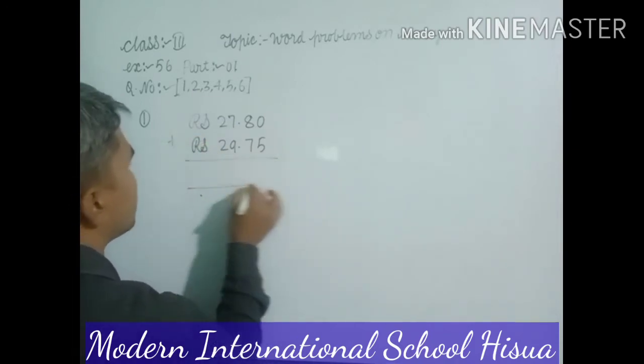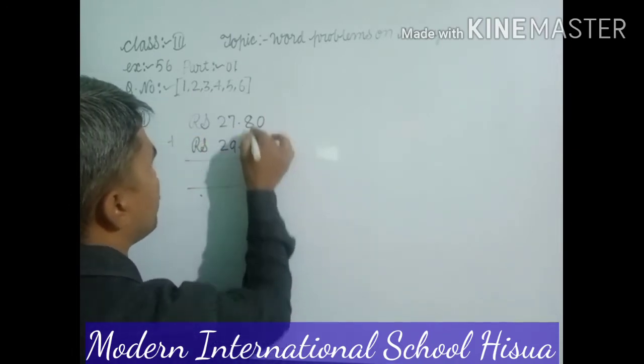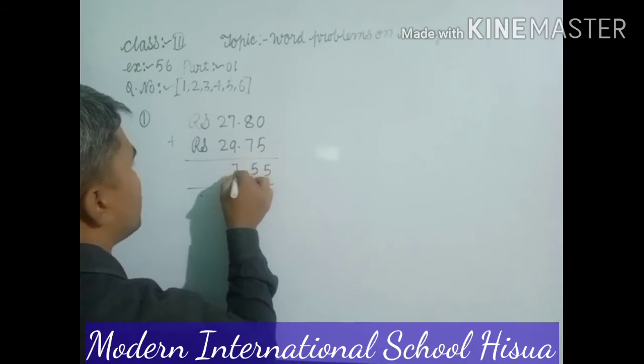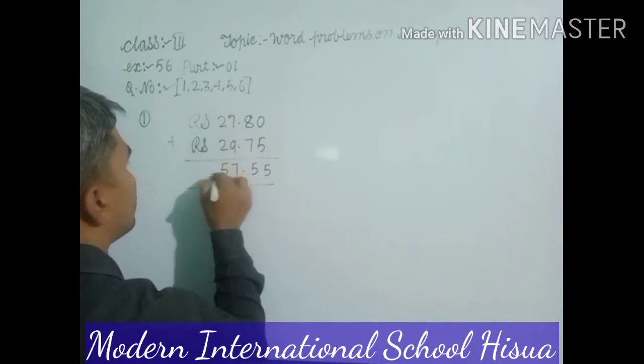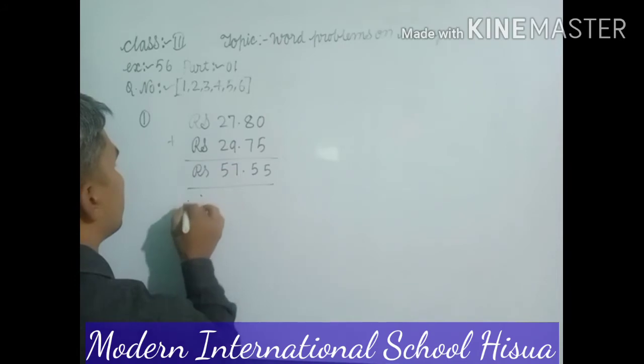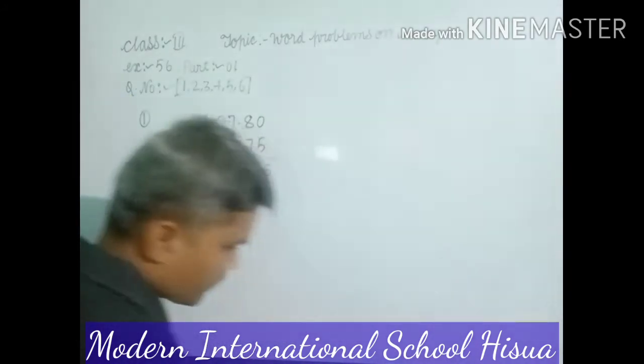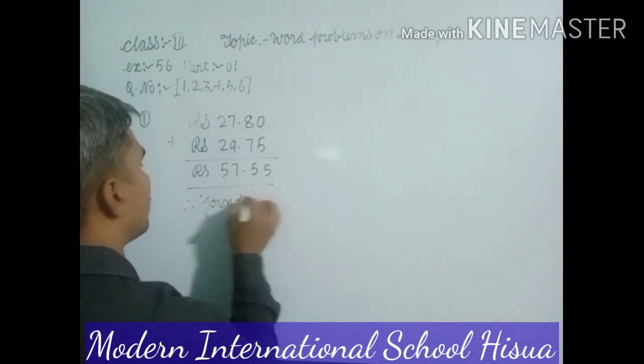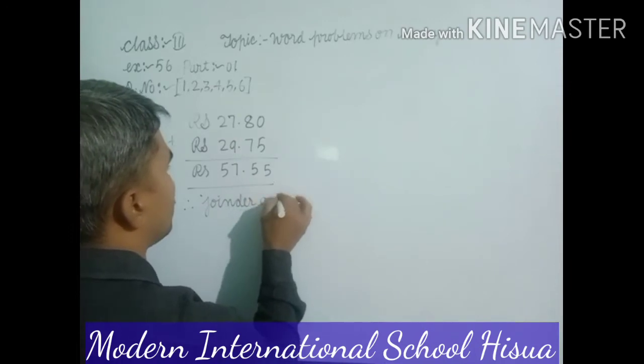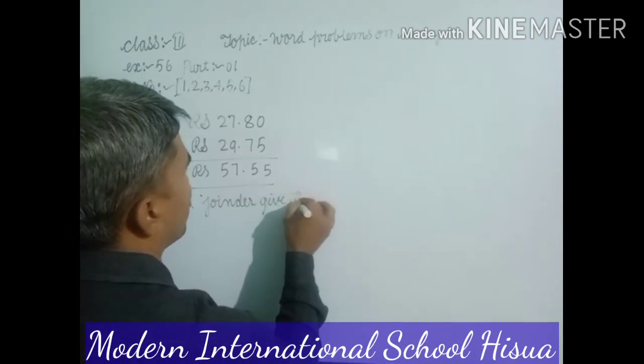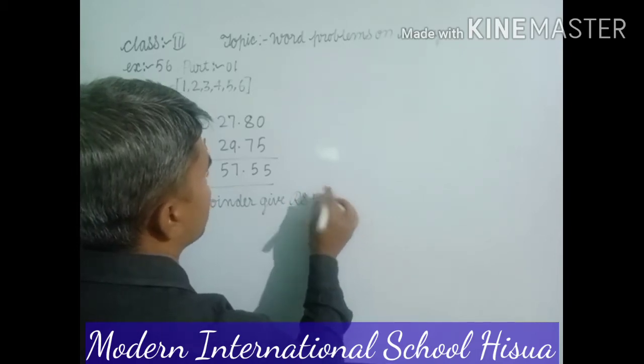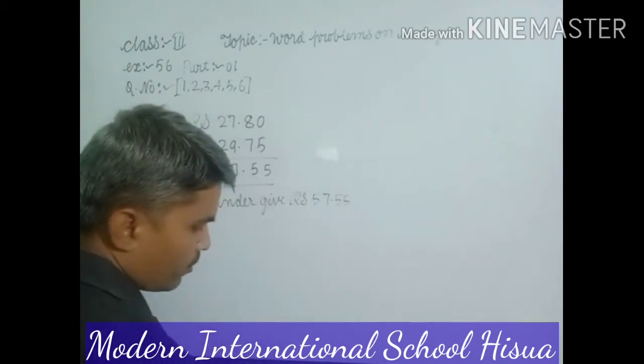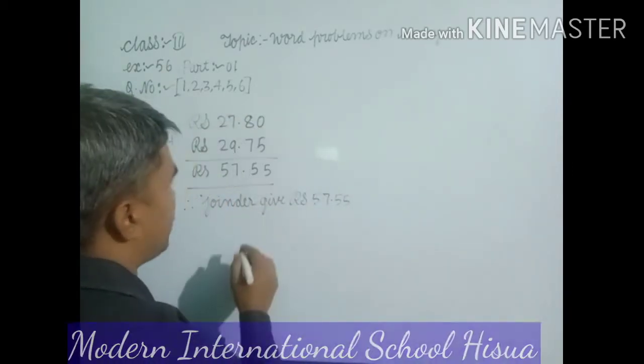When you add this, here 5, here 15, here quarter decimals, 17, 5, that means Joginder give Rs. 57 rupees, 55 paise, giving for firecrackers. Give for buying the firecrackers.